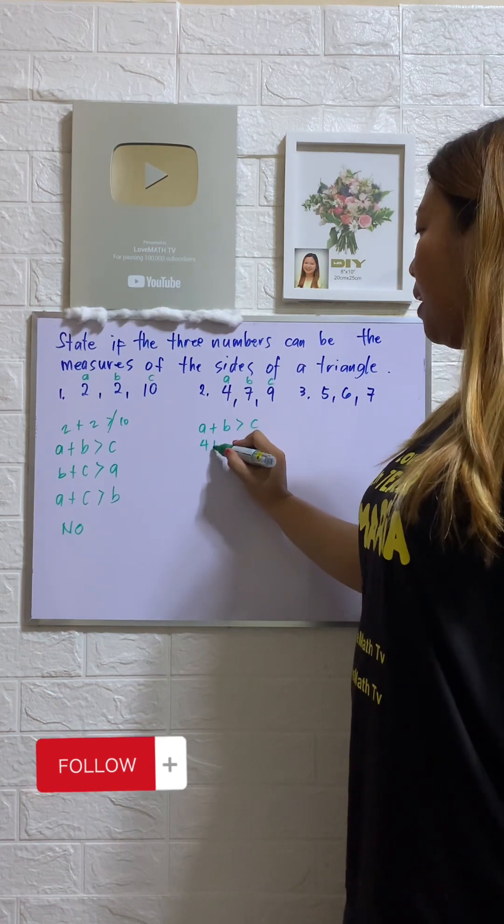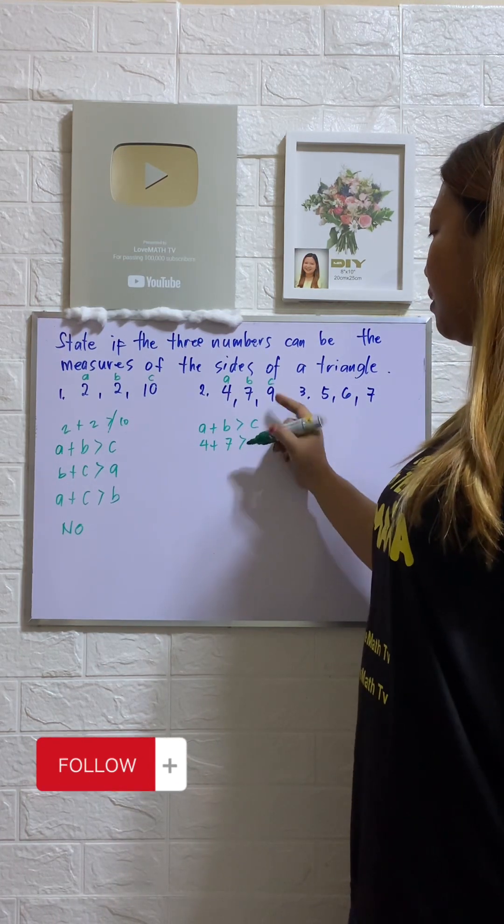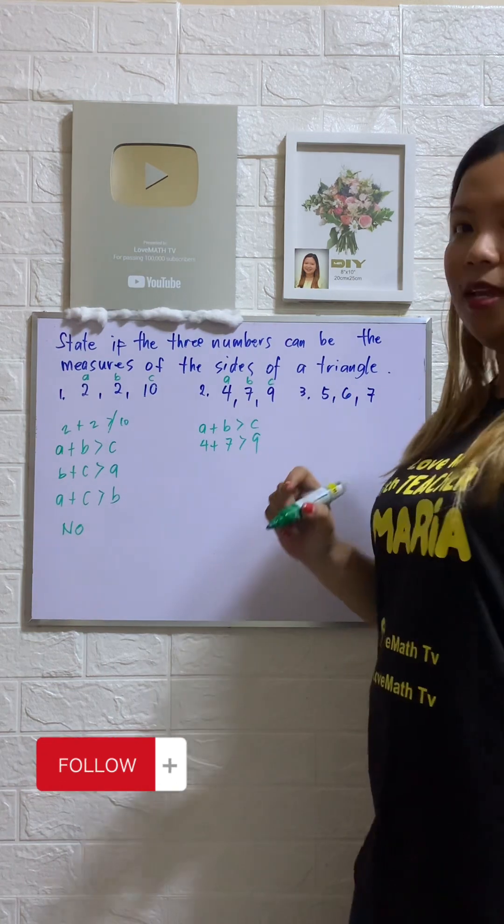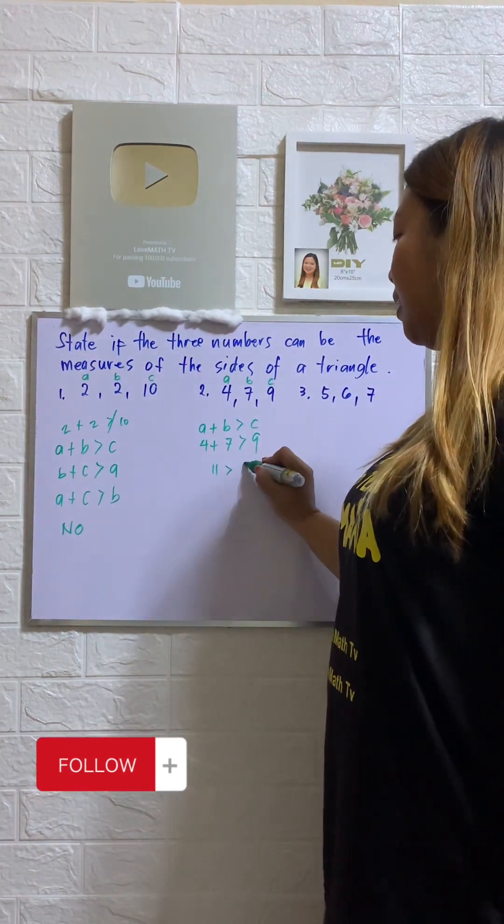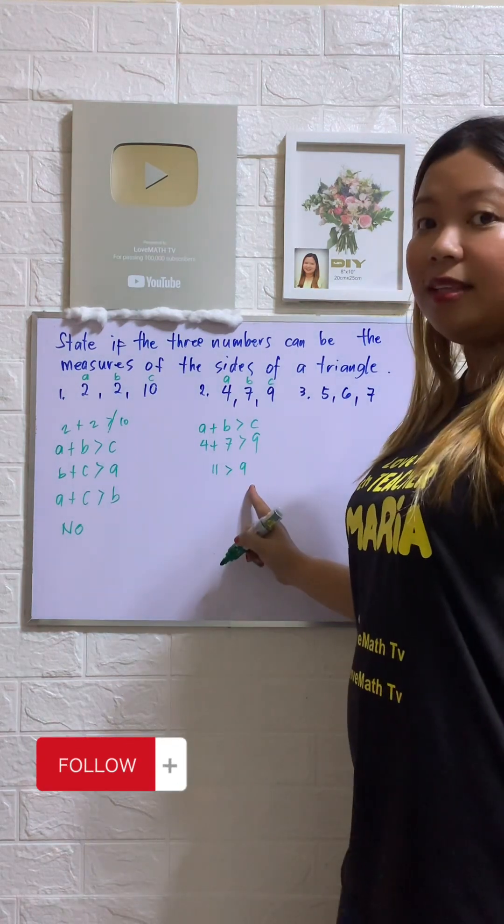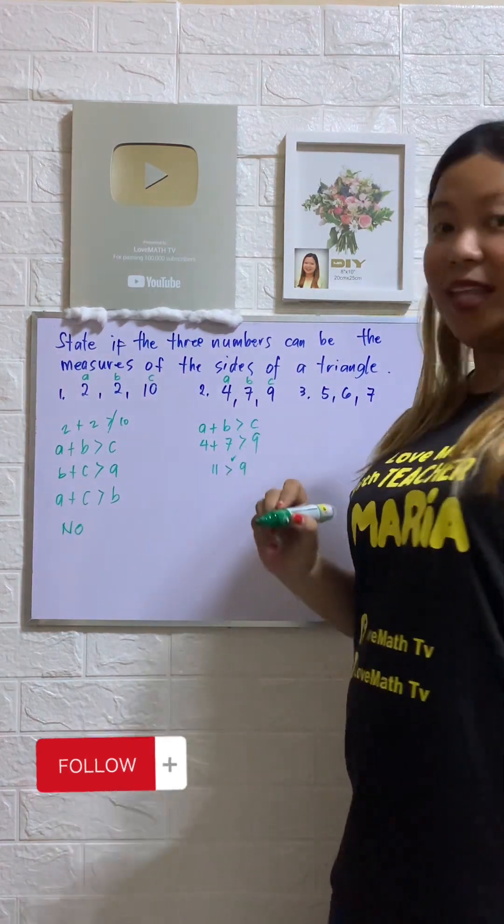4 plus 7, is that greater than 9, which is our C? What is 4 plus 7? That is 11. Is 11 greater than 9? Yes. So pwede.